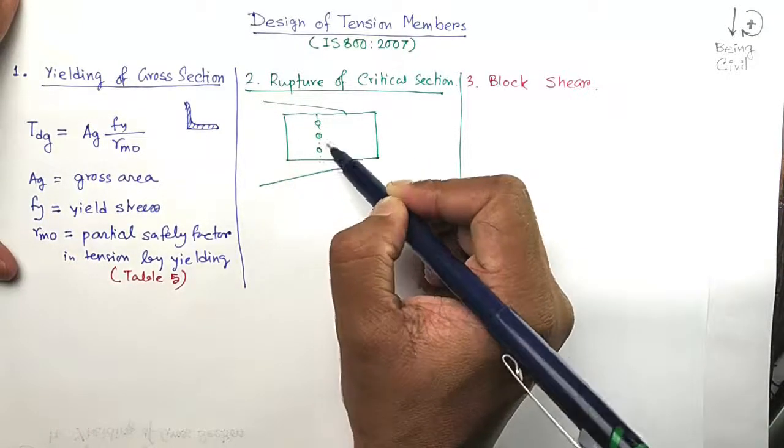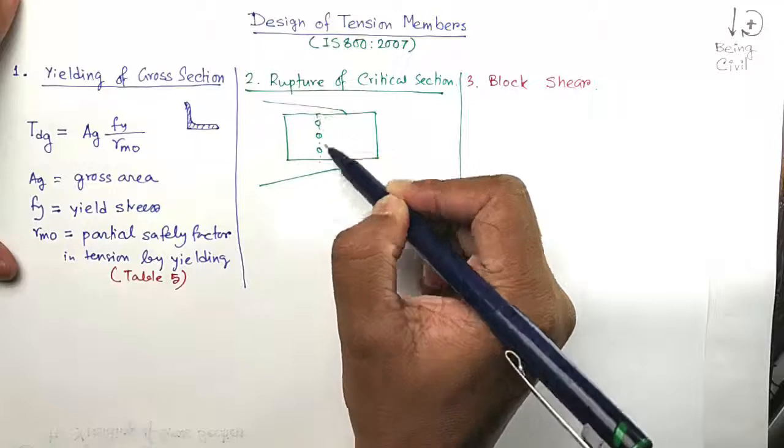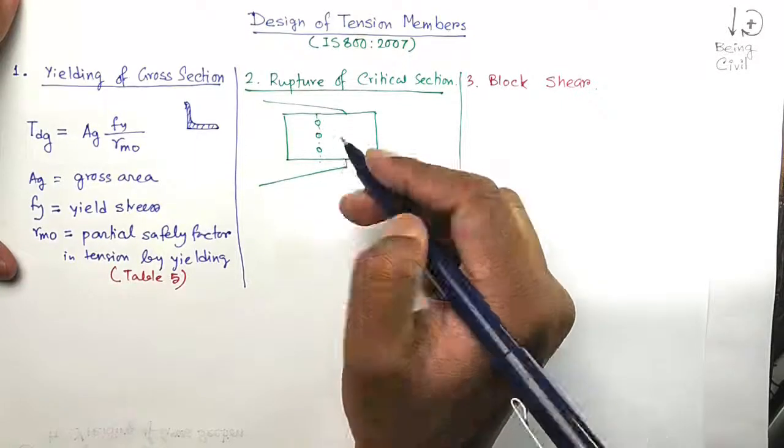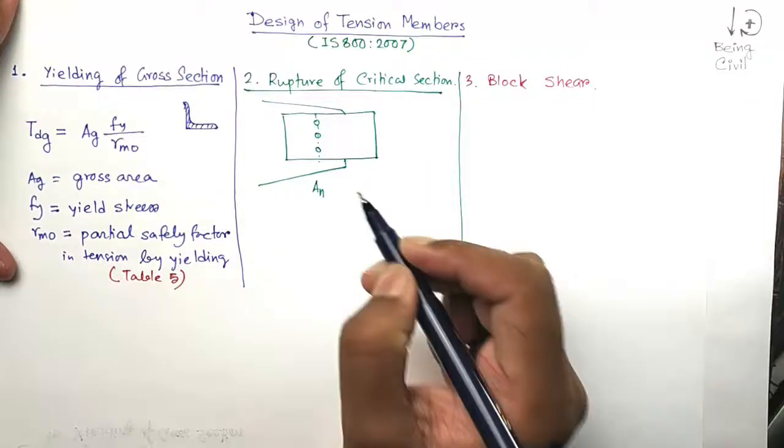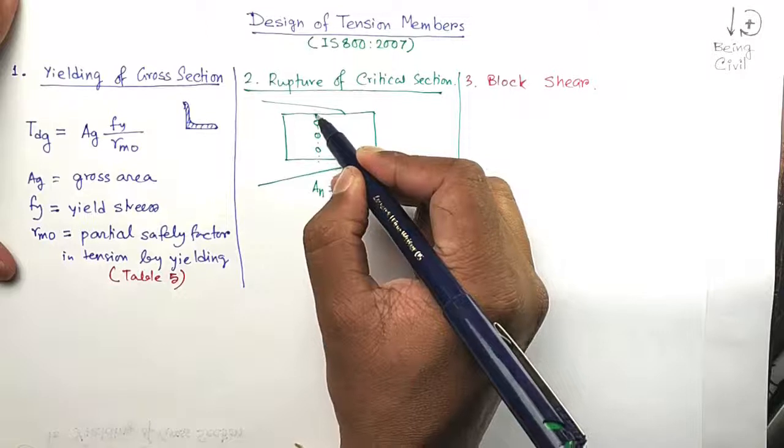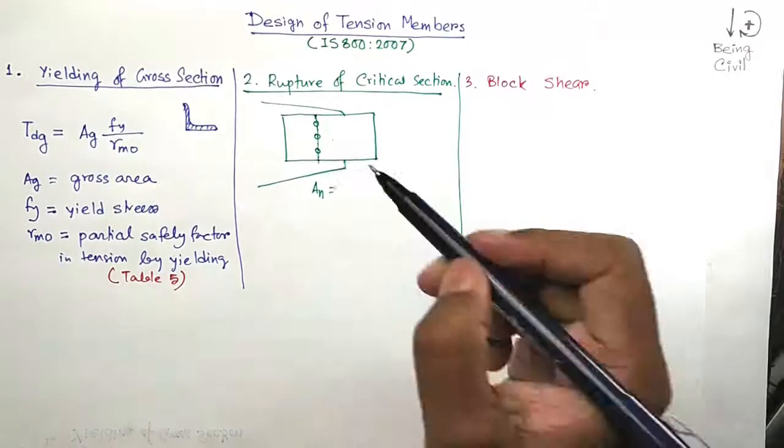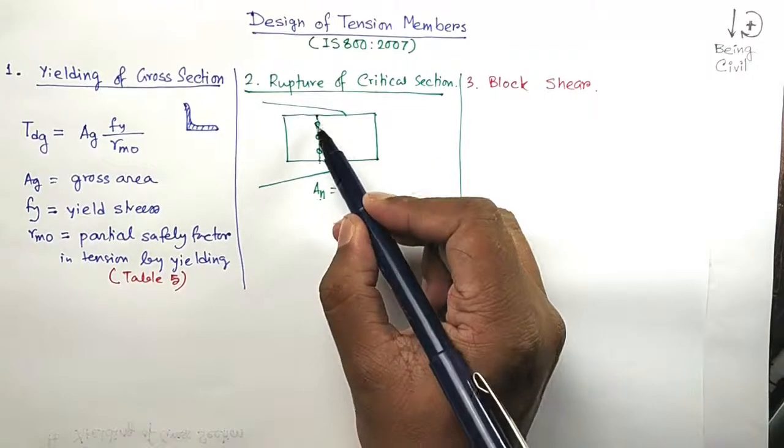This section is called the critical section. And at this critical section, you have to find out the net area, which is AN, which is nothing but the area at this cross section and you have to subtract the area due to these holes.